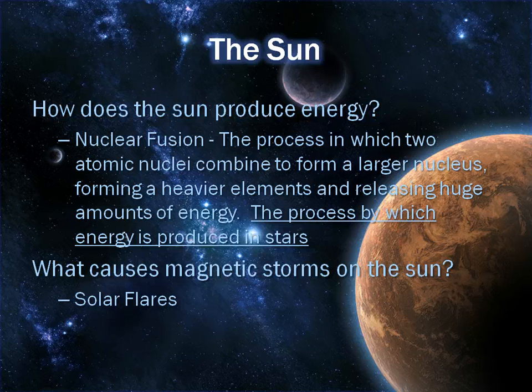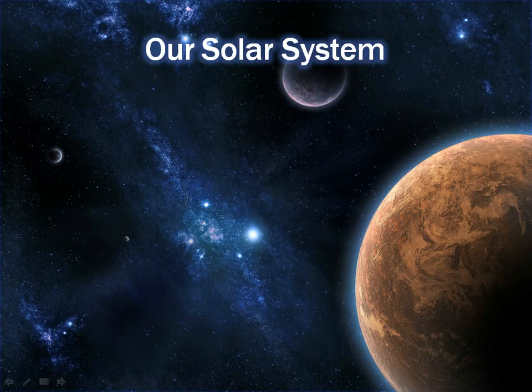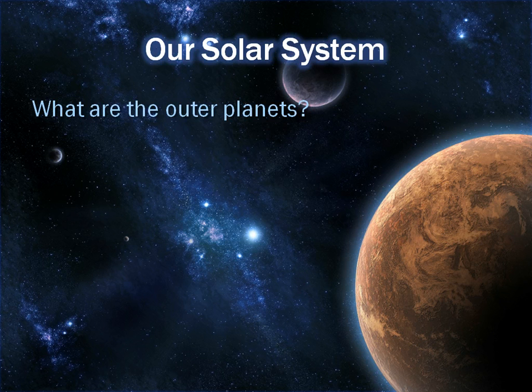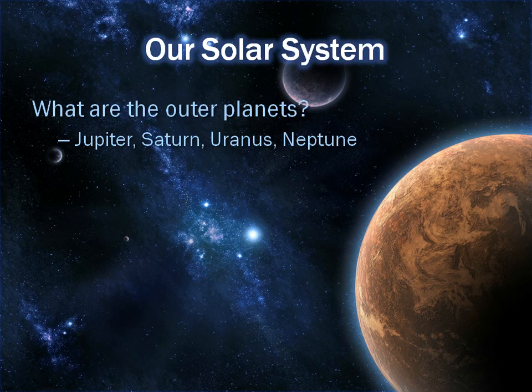Now, the bulk of this quiz is focused on our solar system and looking at the planets. So let's start out with the first topic: what are the outer planets? Those are Jupiter, Saturn, Uranus, and Neptune.